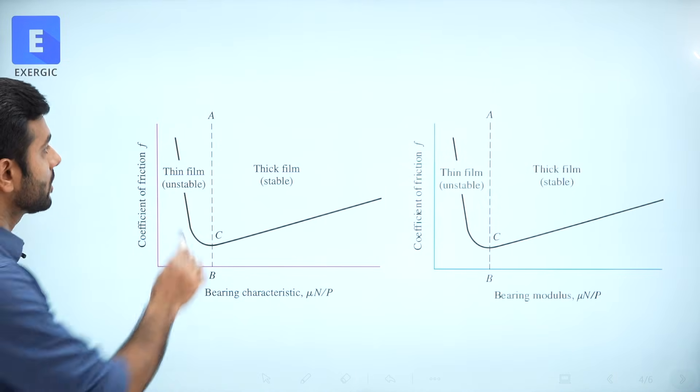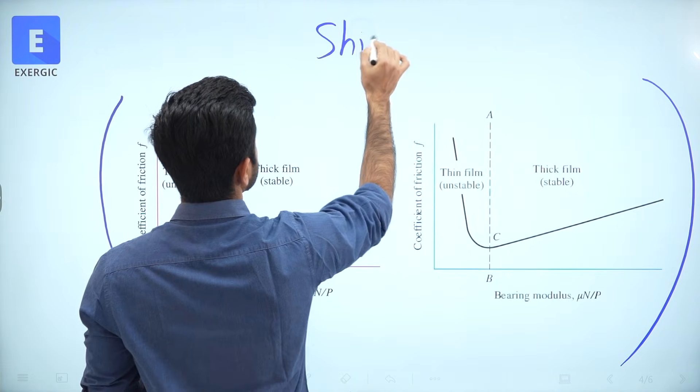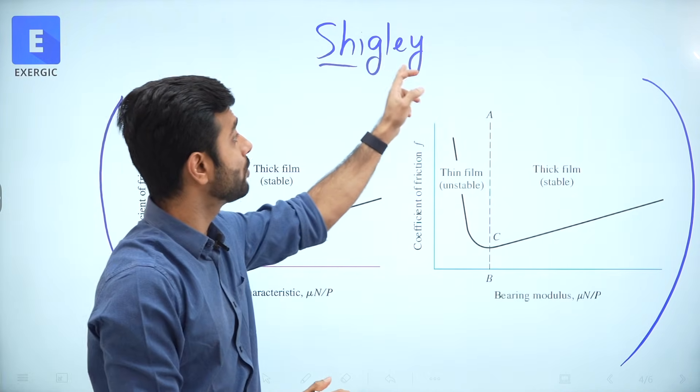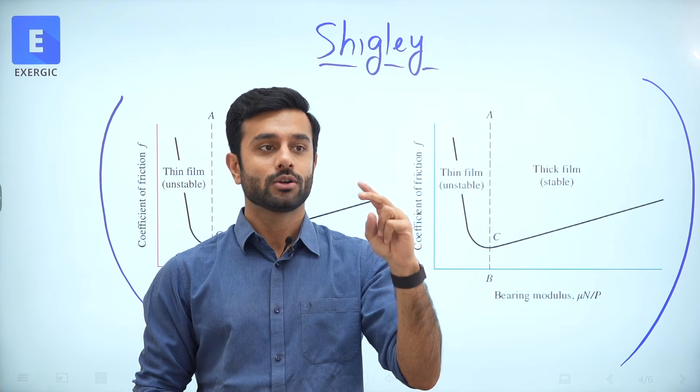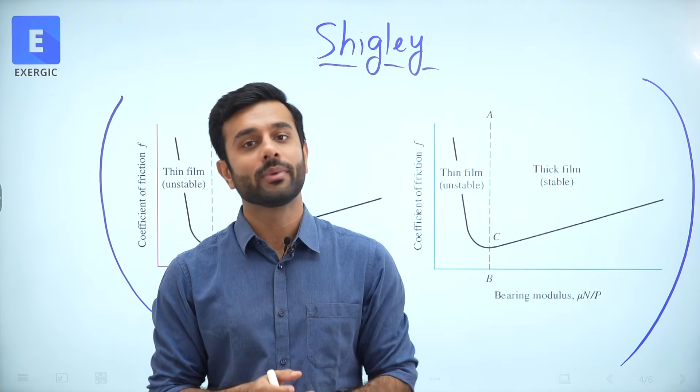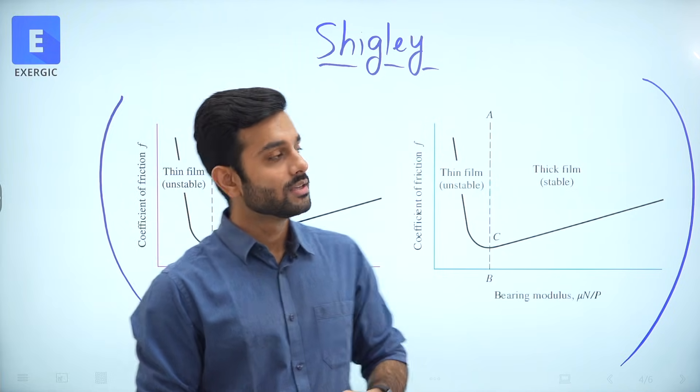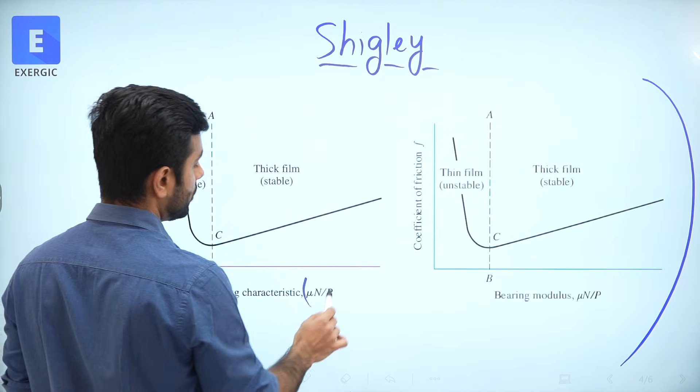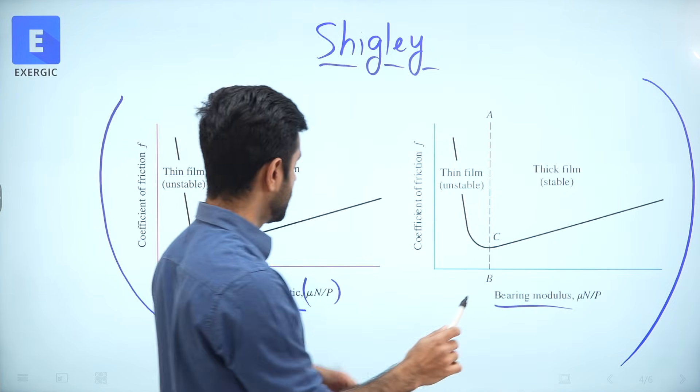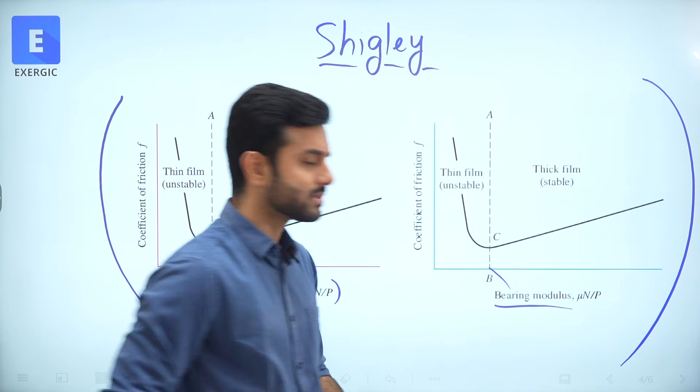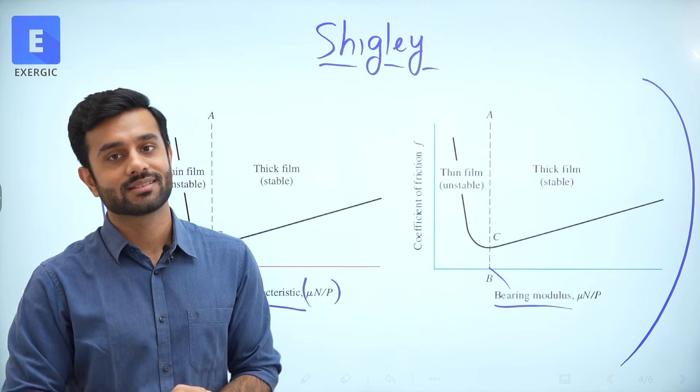We all know this analysis by McKee Brothers. We all know that this axis here is mu n by p, which is Bearing Characteristic Number. I have just written that in slightly enlarged, zoomed in view because video is slightly blurred itself. Let me read Bearing Characteristic Number mu n by p. Got it? No confusion at all? Now, have a look at IIT Delhi's PDF.